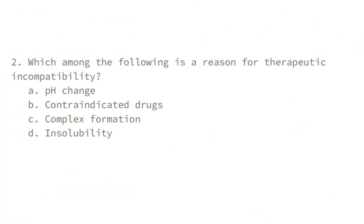Next question: which among the following is a reason for therapeutic incompatibility? The four options are pH change, contraindicated drugs, complex formation, and insolubility. Options A, C, and D are reasons for chemical incompatibility. Therefore, option B — contraindicated drugs — is the appropriate reason for therapeutic incompatibility.